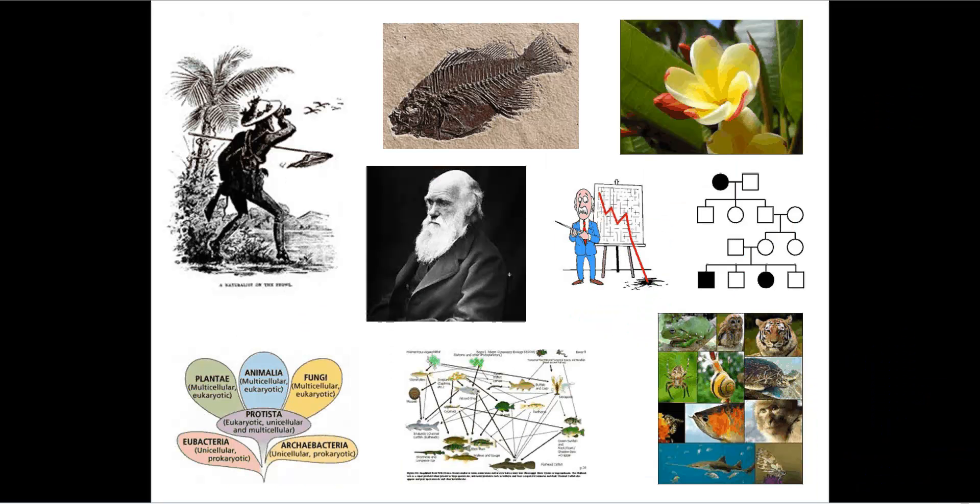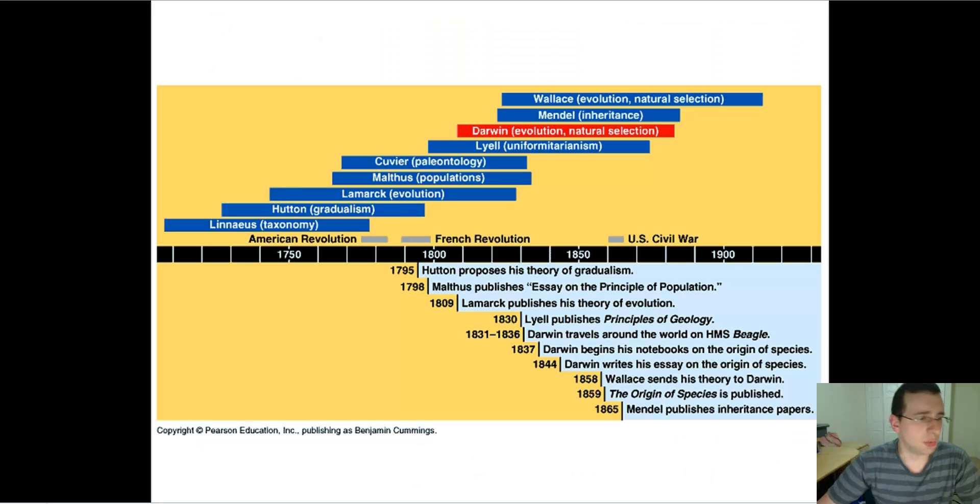All of these ideas are going to be put together by Darwin to come up with his theory of evolution. To review what we talked about, starting in the 1700s, Linnaeus started classifying animals and invented a binomial classification system so that scientists could talk to each other and classify animals based on similarities in their features.